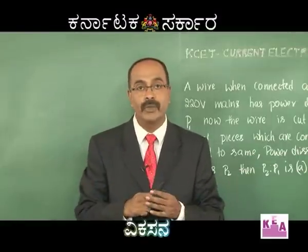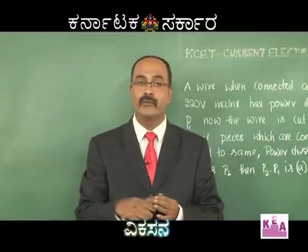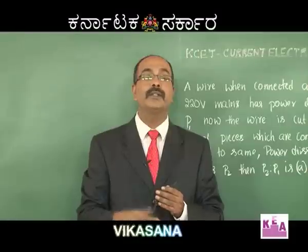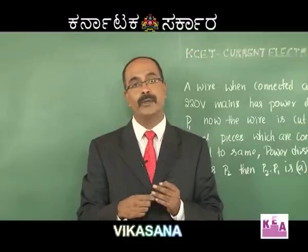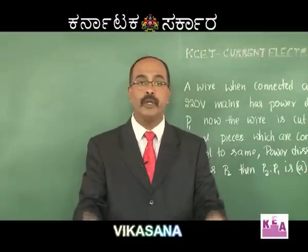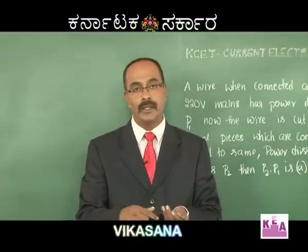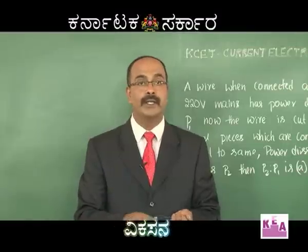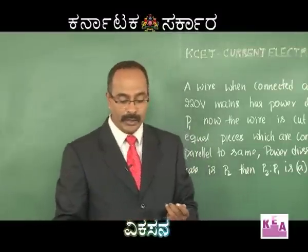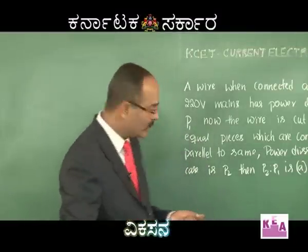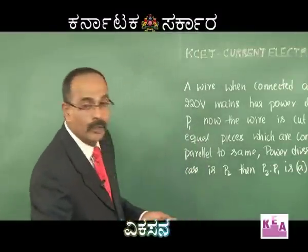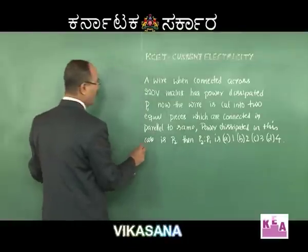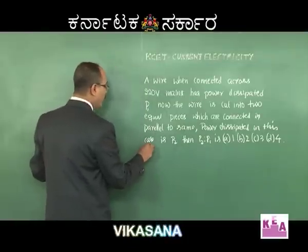V² / R is equal to P1, therefore P2 = 4 × P1, or P2 / P1 = 4. Therefore option D is correct.